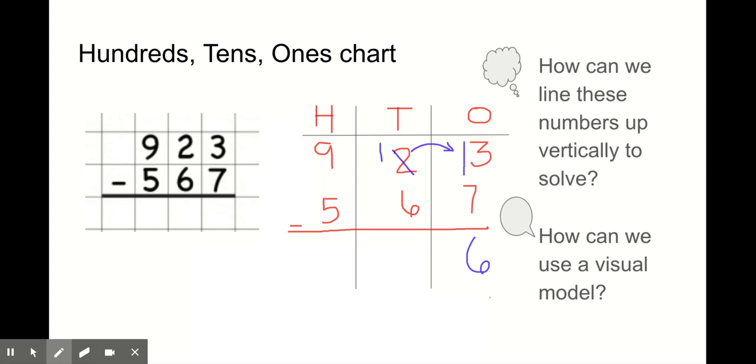Now I need to subtract my tens. Can I take 6 tens away from one 10? No, I can't. Instead, I'll need to borrow from the hundreds. If I move 100 over here, then I get 11 tens. But since I took it away from over here, now I only have 8 hundreds. Can I take 6 tens away from 11 tens? Yes. 11 minus 6 is 5.